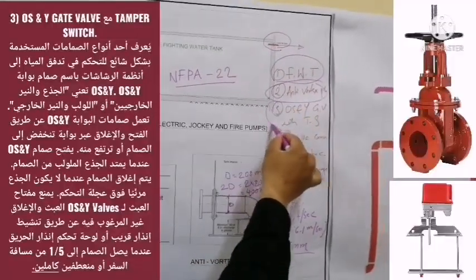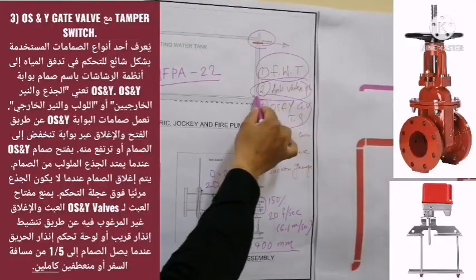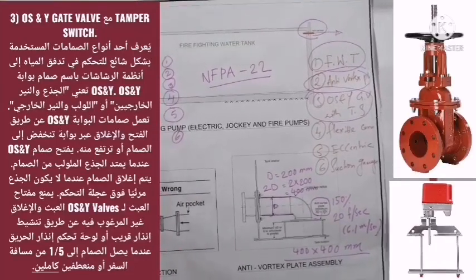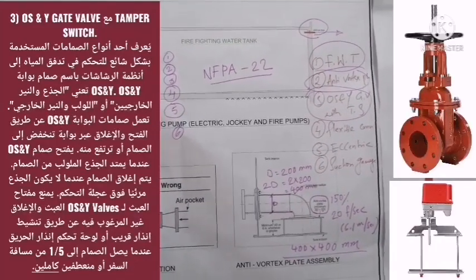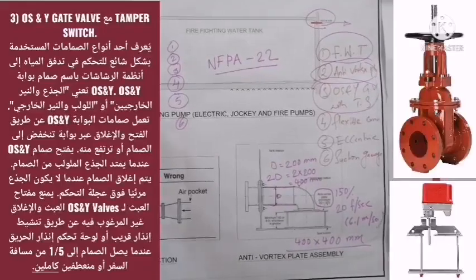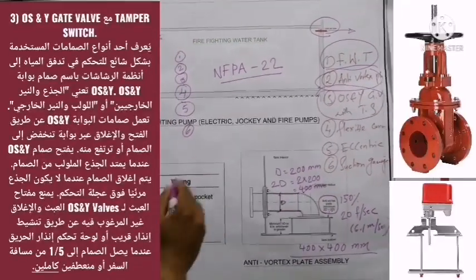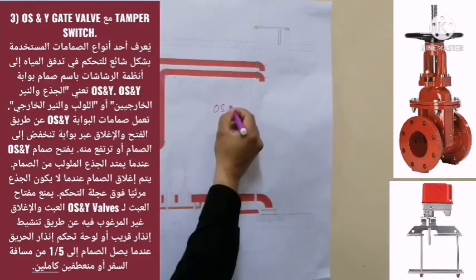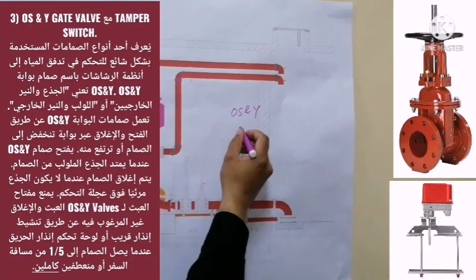Let's discuss number three — the OS&Y gate valve with tamper switch. This is the OS&Y gate valve. You can have a look at the location of the OS&Y gate valve in the suction line. This is one type of valve used to control water flow to the fire sprinkler system, and it is known as the OS&Y gate valve.